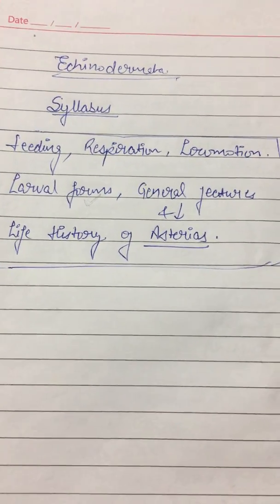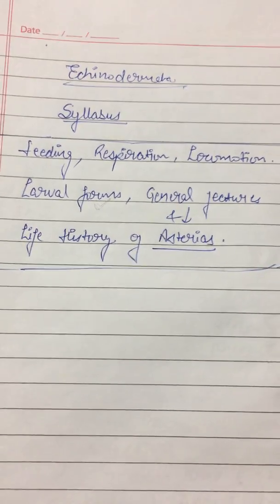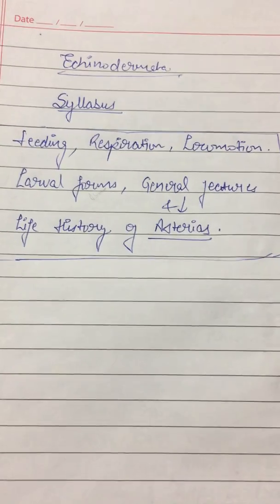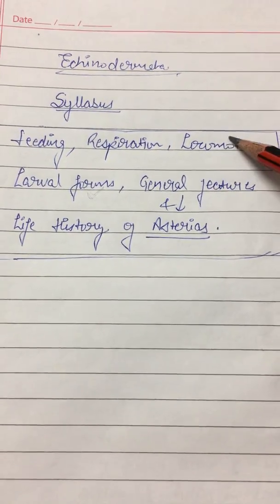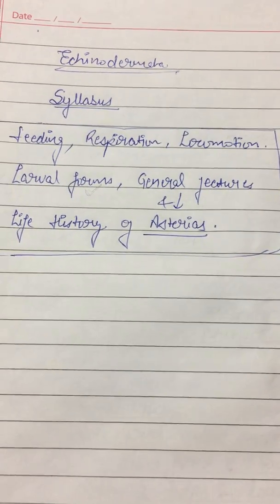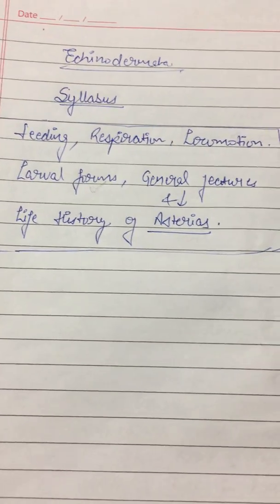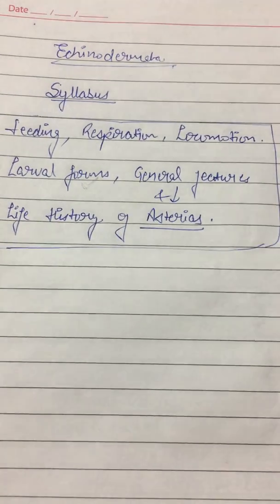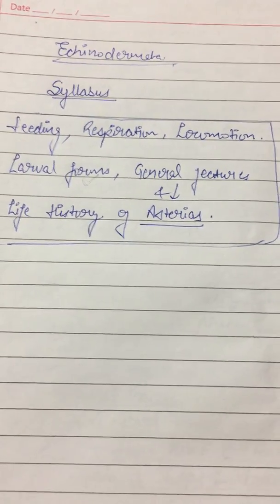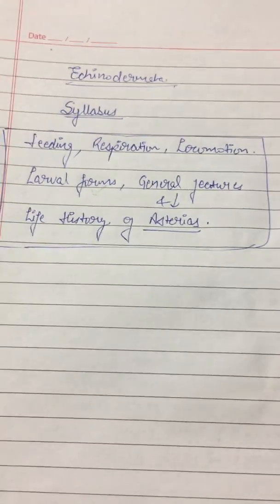Hello everyone, first of all I'm really sorry because after a long time I'm uploading a video. We will start with Echinodermata because this is a very important phylum, and every year from this topic one question will be asked. Last year the question came about the water vascular system of Asterias, which is a starfish, and the chances are very high that in the coming years they will ask the larval forms of Echinodermata.